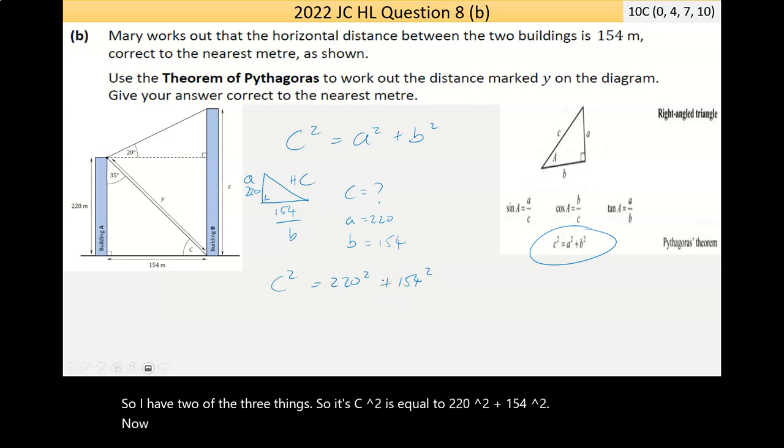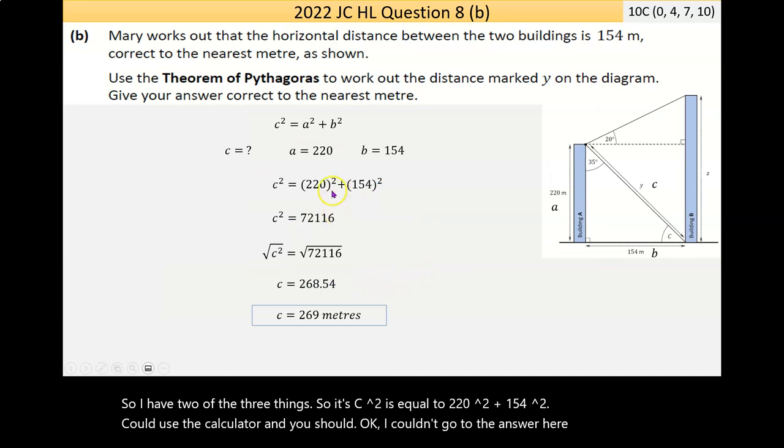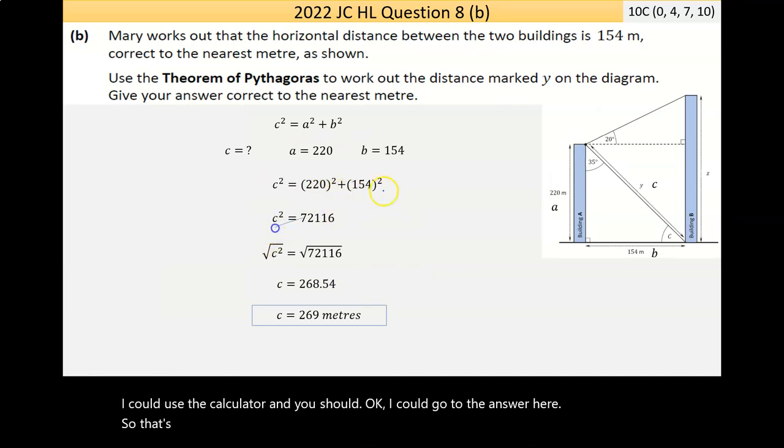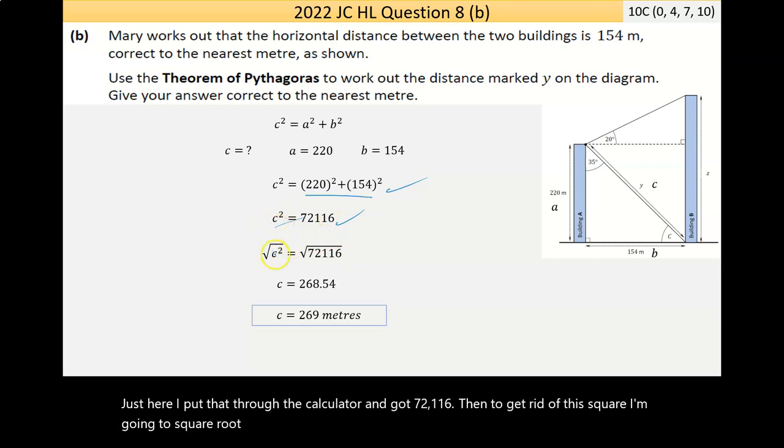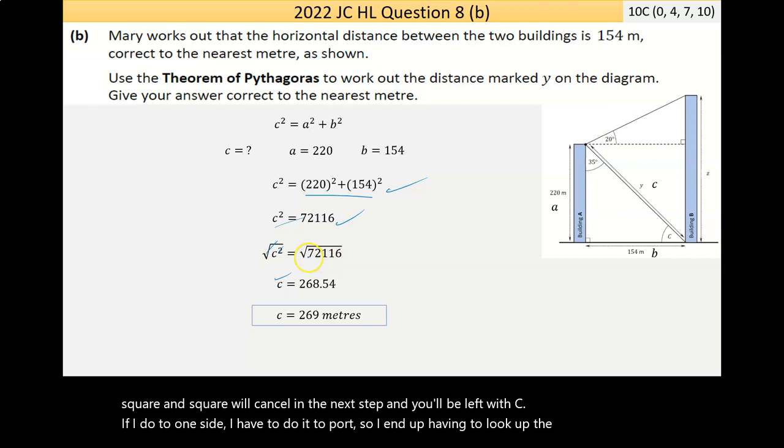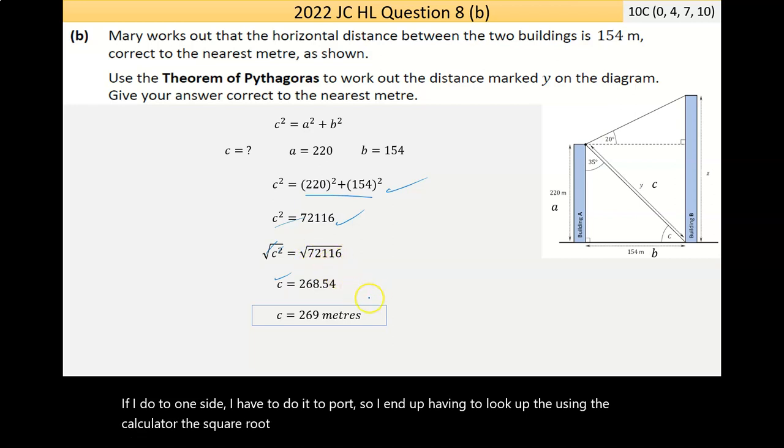I could use the calculator, and you should. I put that to the calculator, and I got 72,116. Then, to get rid of this square, I'm going to square root. If you do the opposite of something, it will get rid of it. So, the square root and the square will cancel in the next step, and you'll be left with C. If I do it to one side, I have to do it to both. So, I end up having to look up, using the calculator, the square root of 72,116, and it gives me the answer of 268.54.